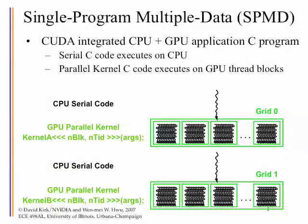Today I'm going to talk about threading hardware in G80. This is a slide borrowed from John Nichols at NVIDIA — one of his Hot Chips slides — that summarizes the CUDA-level threading model nicely. CUDA is a single-program multiple-data threading model: if you look at all the threads executing for a kernel, all of them are based on the same piece of program — they're all executing the same piece of code.